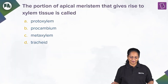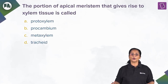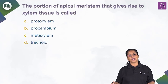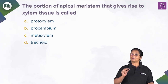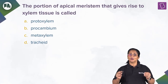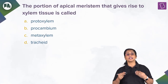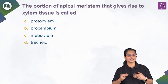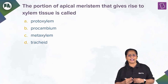Let us solve this question. The portion of apical meristem that gives rise to xylem tissue is called protoxylem, procambium, metaxylem, or tracheid. As we all know, meristems represent a group of cells — a tissue made up of undifferentiated cells undergoing continuous mitotic divisions to give rise to new cells. Their main function is growth and repair.